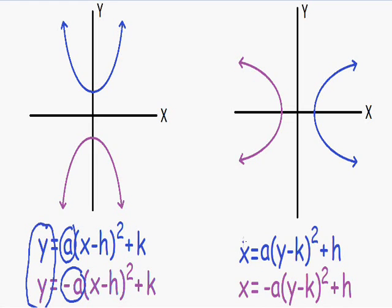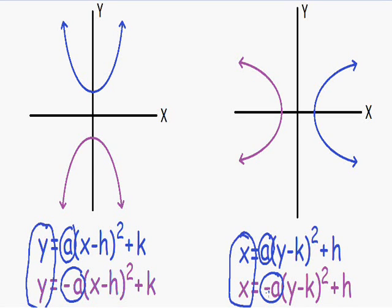Now let's look at sideways parabolas. You know it's going to be a sideways parabola if the equation is written in terms of x — you have x on the left-hand side and y on the right-hand side. To know if it's pointing left or right, you look at your A value, the value in front of your parentheses. If A is positive, it's going to open to the right. If A is negative, it's going to open to the left. The blue equation has a positive A and opens right; the purple equation has a negative A and opens left.